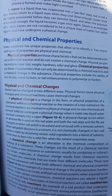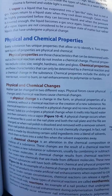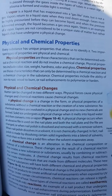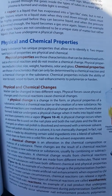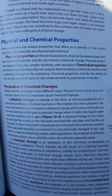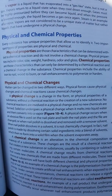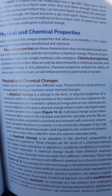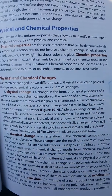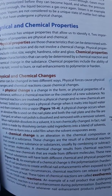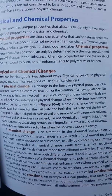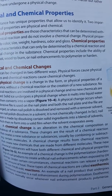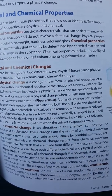A chemical change is an alteration in the chemical composition or makeup of a substance. These changes are the result of a chemical reaction that creates a new substance or substances, usually by combining or subtracting certain molecules. A chemical change results in new chemicals made from different molecules. These new chemical substances will have both different chemical and physical properties. An example of a chemical change is the polymerization or hardening of nail products to create artificial nail enhancements when exposed to UV energy.